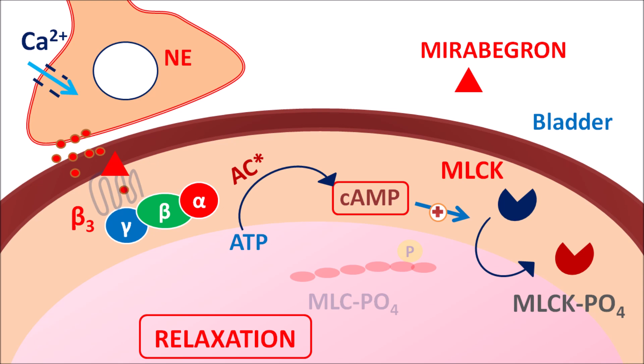In this way, Mirabegron increases relaxation of the detrusor muscle, leading to increased storage capacity of the bladder. This reduces urinary incontinence, as urine is stored more within the bladder, also reducing urinary frequency and urinary urgency in the patients.